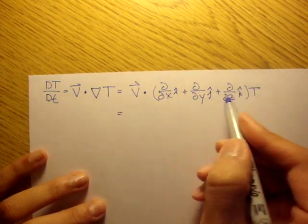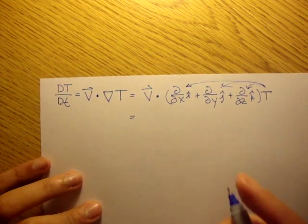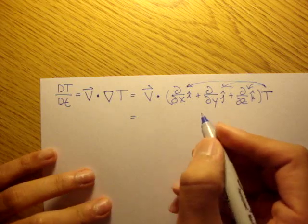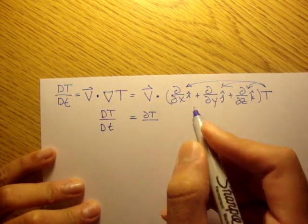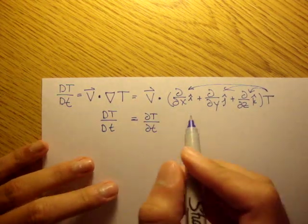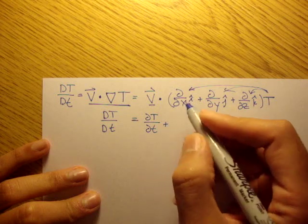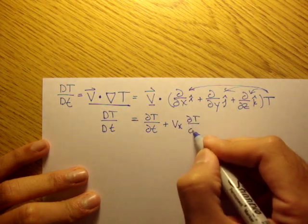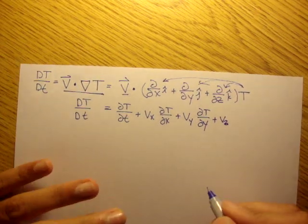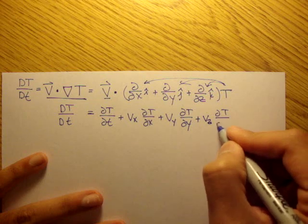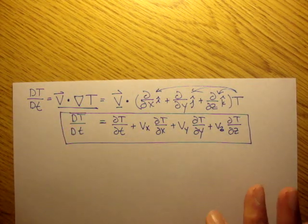And that, if we do the dot product and bring this T into all of our del operating components, we'll get DT/Dt is equal to the partial of the temperature in respect to time. That's actually not in this equation, but we include it because sometimes the velocity does depend on time, plus Vx ∂T/∂x plus Vy ∂T/∂y plus Vz ∂T/∂z. That is our material derivative.